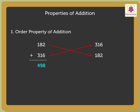Now, let us change the order of addends. Let us add 316 and 182. Again, we get the sum 498.